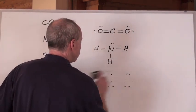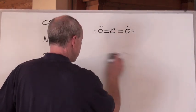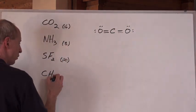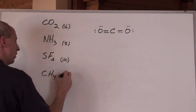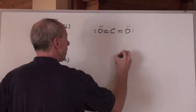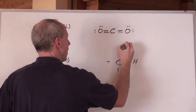And then the last one, CH4. Well, carbon's in group 4 and hydrogen's in group 1 times 4 is going to give you 4 plus 4 is 8. So carbon's in the middle, 4 hydrogens around it. Hey, everybody.